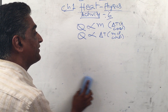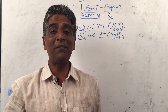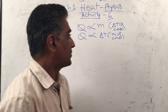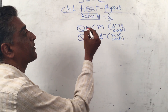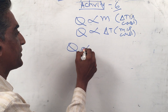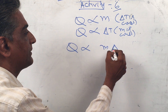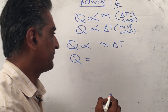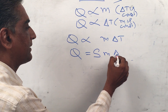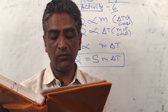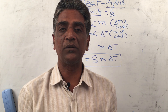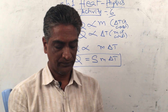We are converting the physics into mathematics — mathematizing the concept. Q is directly proportional to m and to delta T, so Q is directly proportional to m times delta T. To convert the proportionality into an equation we introduce a constant s, giving us Q = m s delta T.